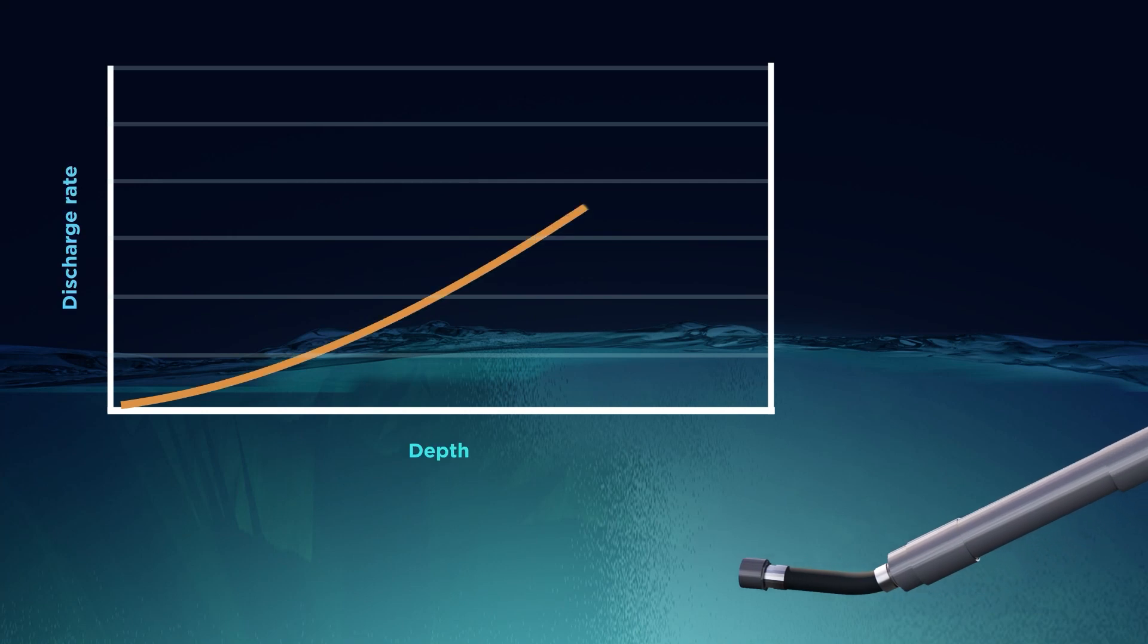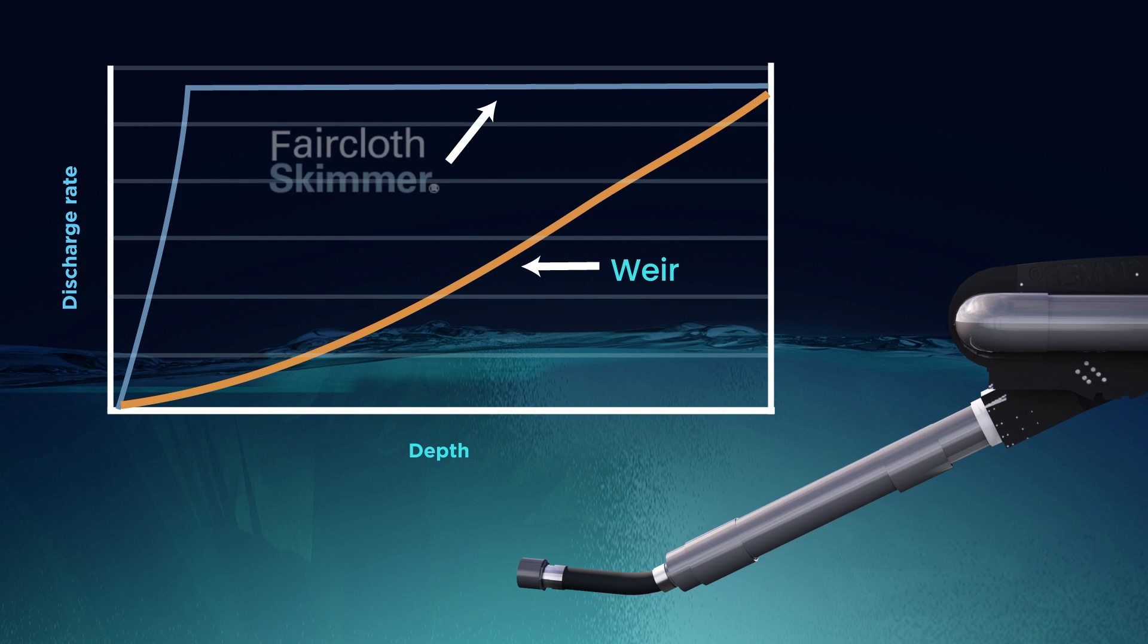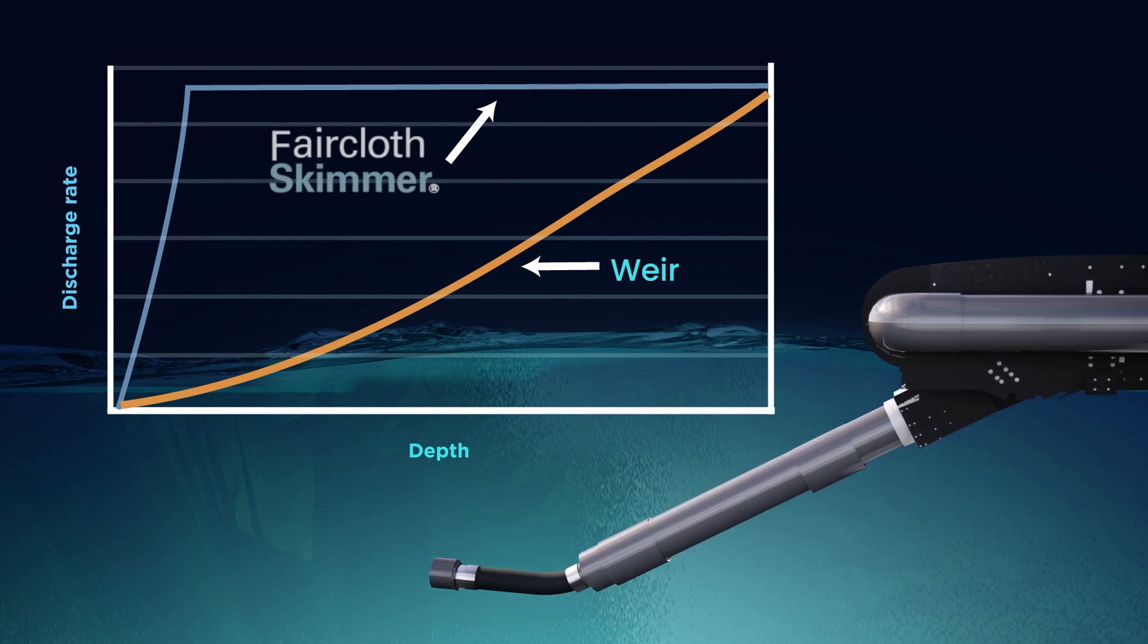When the Faircloth Stormwater Skimmer is used as the flow control system, the allowable peak rate of discharge is achieved at a much earlier point in time and for a longer duration.